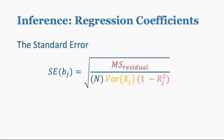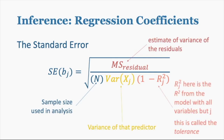The standard error for each coefficient looks like the square root of MS residual — an estimate of the variance of the residuals — divided by the sample size N, times the variance of our X variable associated with that coefficient, times a special term called one minus R-squared-j. That last term is called the tolerance, which is a measure of the independence of X-j from the other predictors and only comes up in multiple regression.